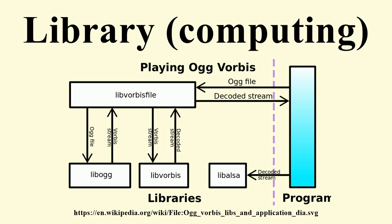In IBM's OS/360 and its successors, they are referred to as partition data sets. In computer science, a library is a collection of implementations of behavior, written in terms of a language, that has a well-defined interface by which the behavior is invoked.